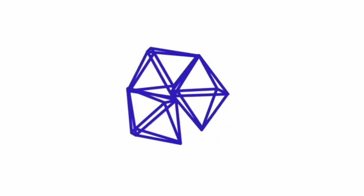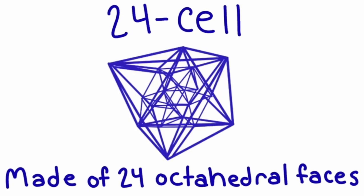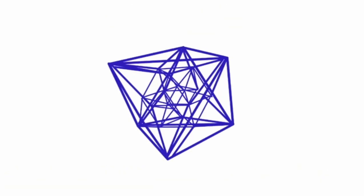Third, we can use the octahedron. If we put three octahedra around a shared edge to create a corner, we create the 24-cell. The 24-cell is made of 24 octahedral faces.